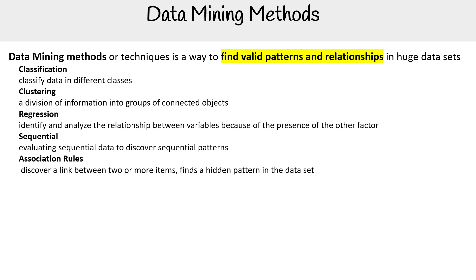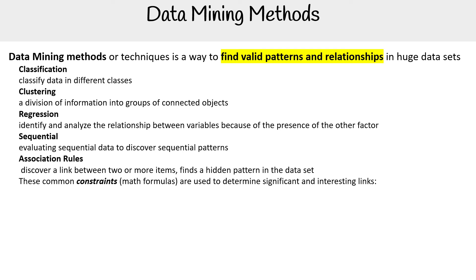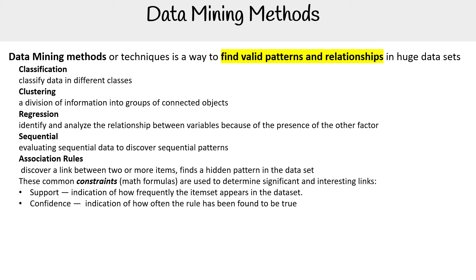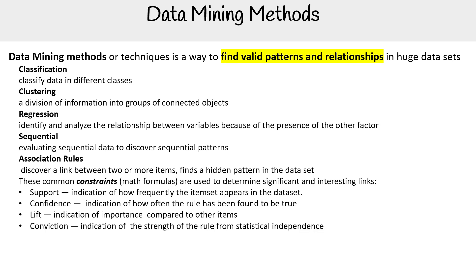We have association rules, which discover a link between two or more items to find hidden patterns in data sets. These common constraint math formulas are used to determine significant and interesting links. We have support — an indication of how frequently the item set appears in the data set — and confidence — an indication of how often the rule has been found to be true.